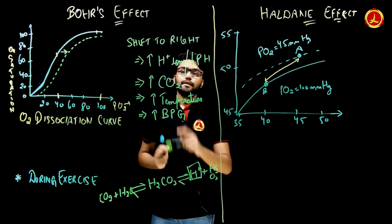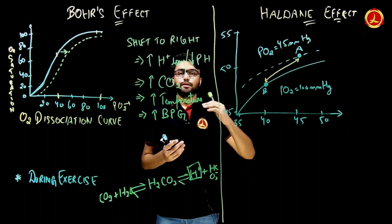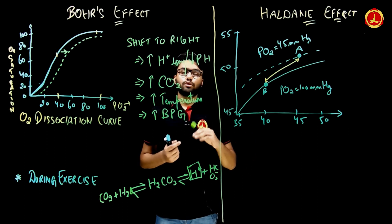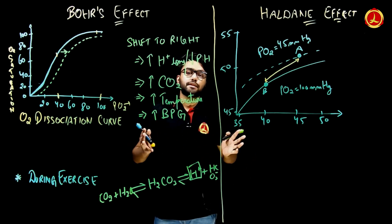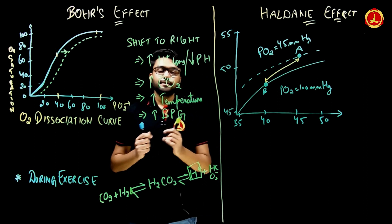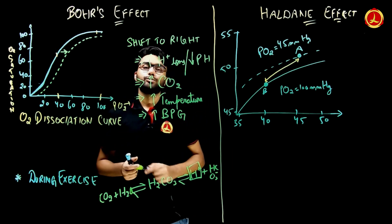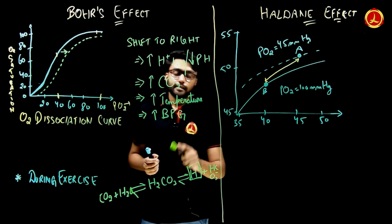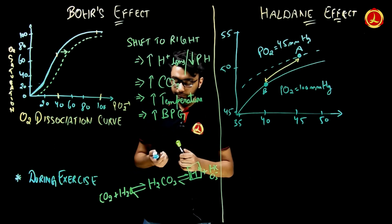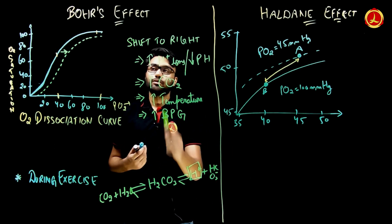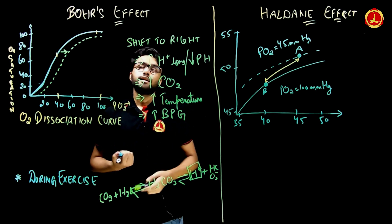A second cause of the right shift is increased CO2, which rises when tissues consume oxygen and release carbon dioxide. Increased temperature and increased 2,3-BPG (2,3-bisphosphoglycerate), a metabolite, also cause the curve to shift from left to right.